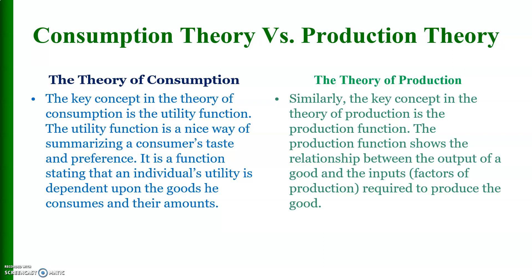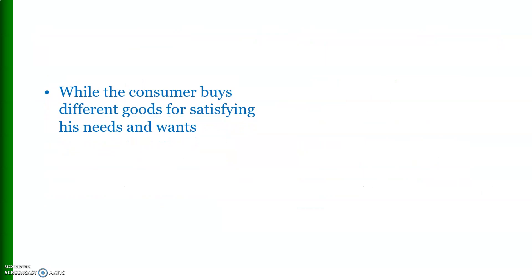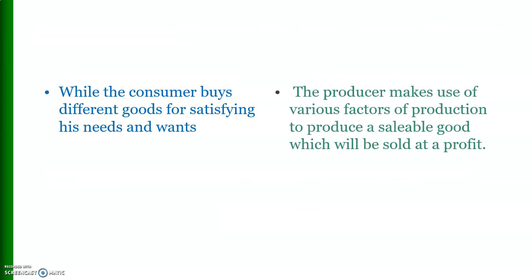The utility function states that an individual's utility is dependent upon the goods he consumes and their amounts. The production function shows the relationship between the output of a good and the two factors of production — the two inputs required to produce that good. While the consumer buys different goods for satisfying his needs, the producer makes use of various factors of production to produce a good.